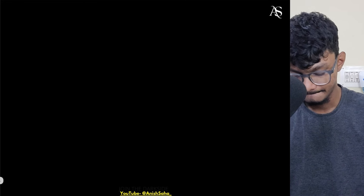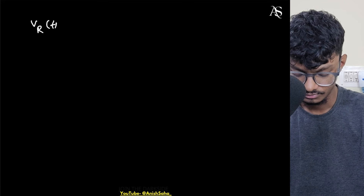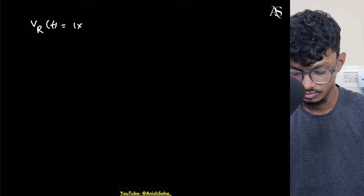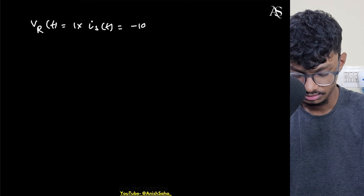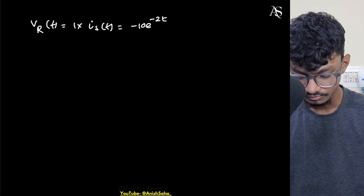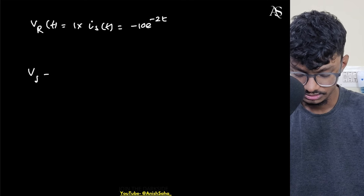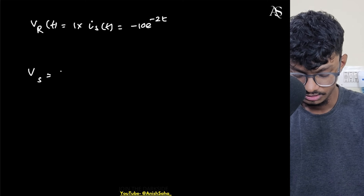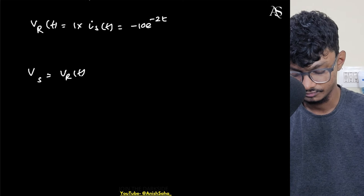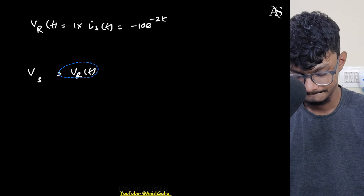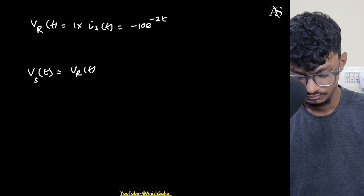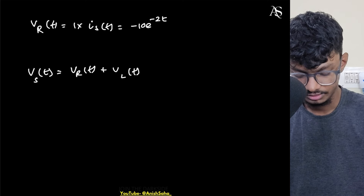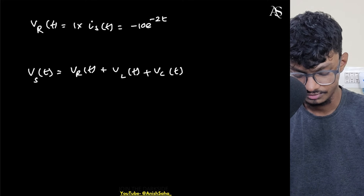Now VR — the resistor voltage — is simply 1 × Is(t) = -10e^(-2t). So Vs(t) = VR(t) + VL(t) + Vc(t).